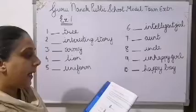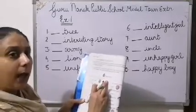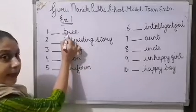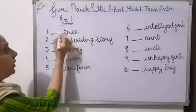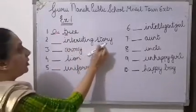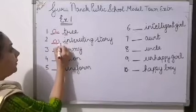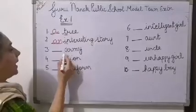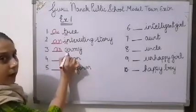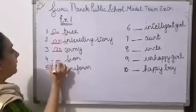Now we will do Exercise 1, page number 28: fill in the blanks with A or AN. First: dash tree. Tree starts with T, which is a consonant, so we use A — a tree. Second: dash interesting story. Interesting starts with an 'i' sound, so we use AN — an interesting story. Third: dash army. Army starts with A, a vowel sound, so AN — an army. Fourth: dash line. L is a consonant, so we use A — a line.